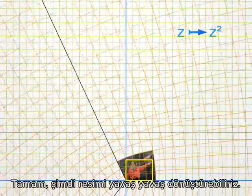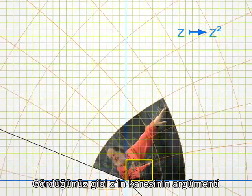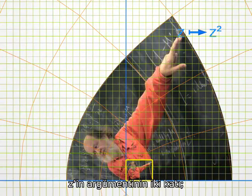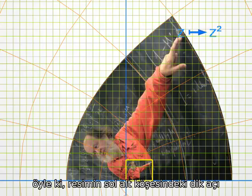OK, now we can transform the photo progressively. Notice that the argument of Z squared is twice the argument of Z, so that the right angle on the lower left of the photo is doubled under the transformation.